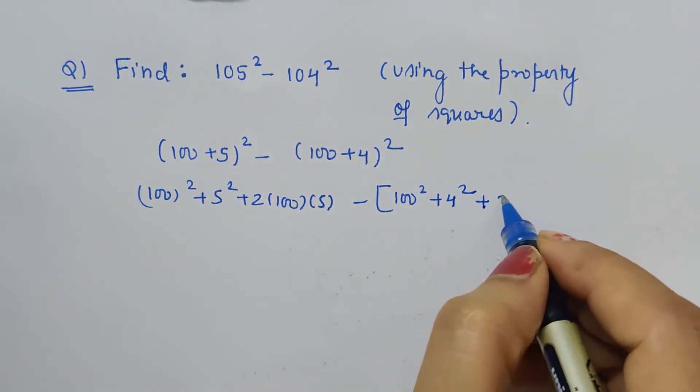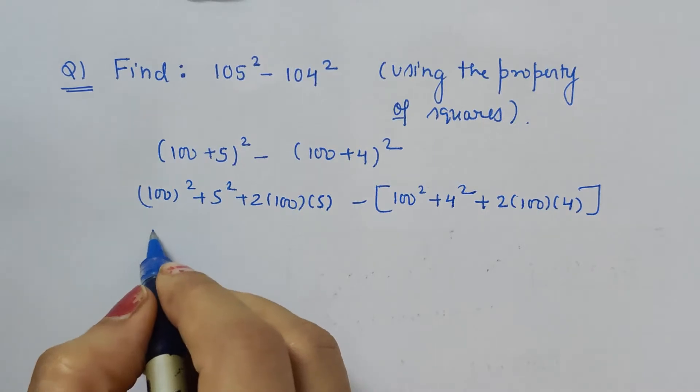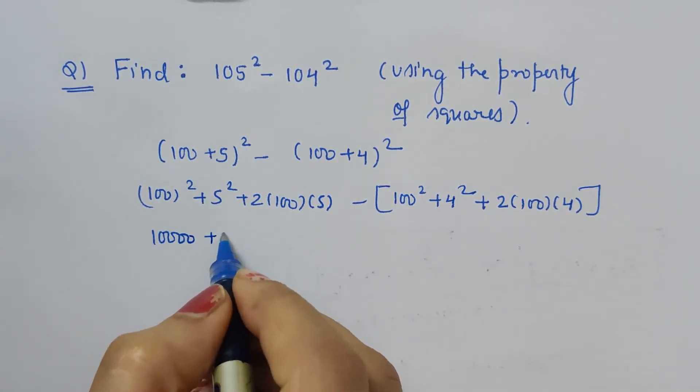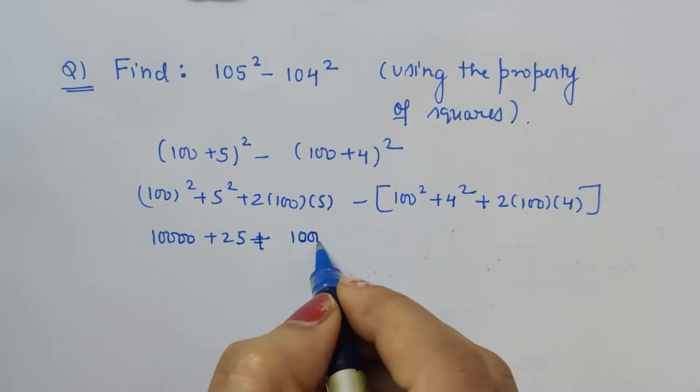Now 100² is 10000, 5² is 25, 2(100)(5) is 1000. Then minus [10000 + 16 + 800].